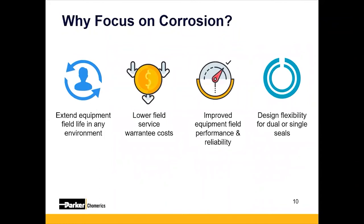Why do we focus on corrosion? Because we want our box to work in the field for a long time. What do we mean by improved field reliability? If you have a 20-year field life requirement and you've designed your box with an EMI gasket, the issue is shielding decay. Shielding performance can drop over time as a result of corrosion, largely due to oxides that build up on the surface of the interfaces. Over that 20-year life cycle, you may not be meeting the requirements you originally designed in.